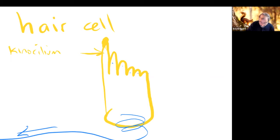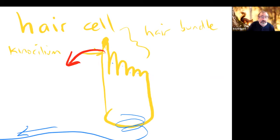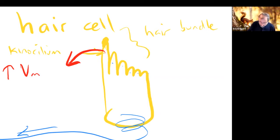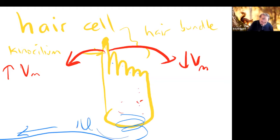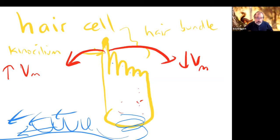You can bend the whole hair bundle either way. If you bend it towards the kinocilium, it'll increase the membrane voltage of the cell. If you bend it away from the kinocilium, it's going to decrease the voltage. So this is basically a mechanotransducer — it's transforming mechanical movement into a voltage change.